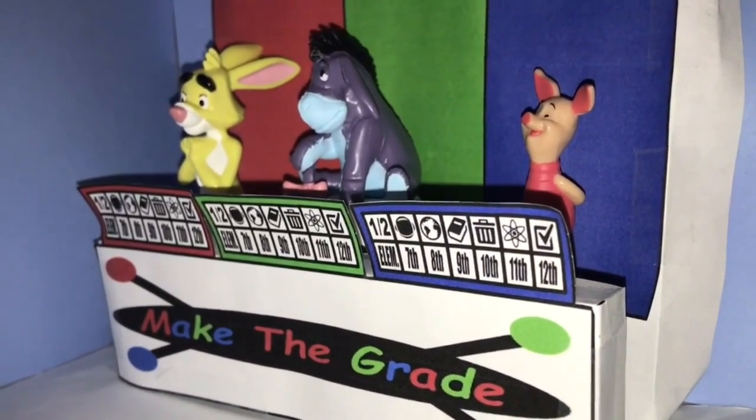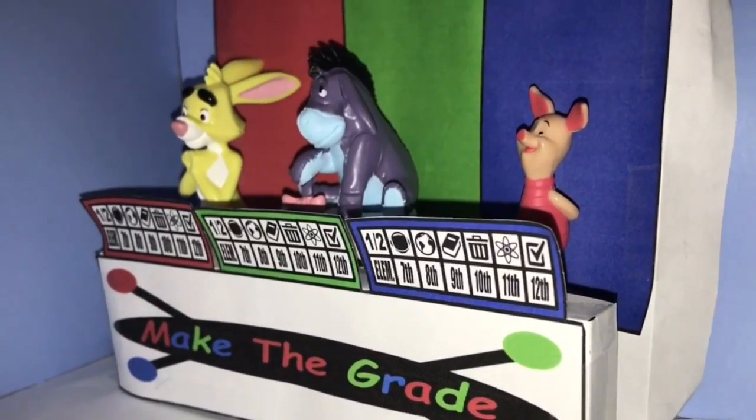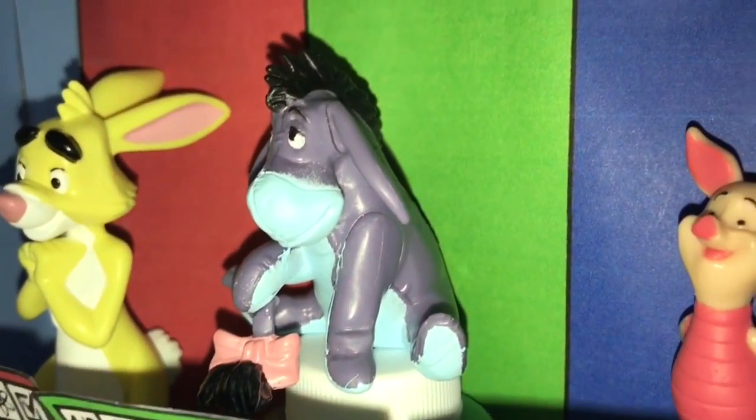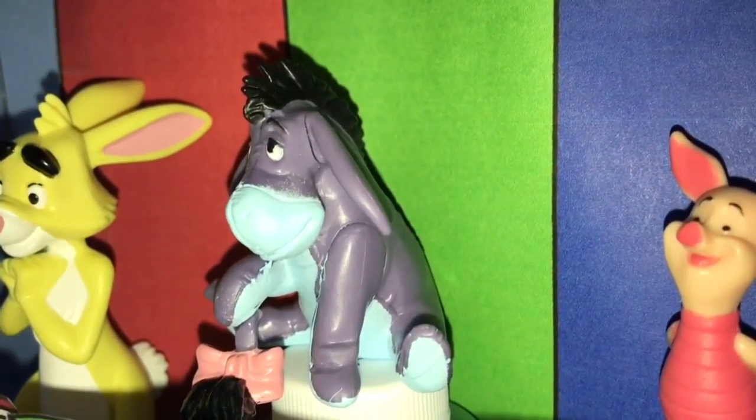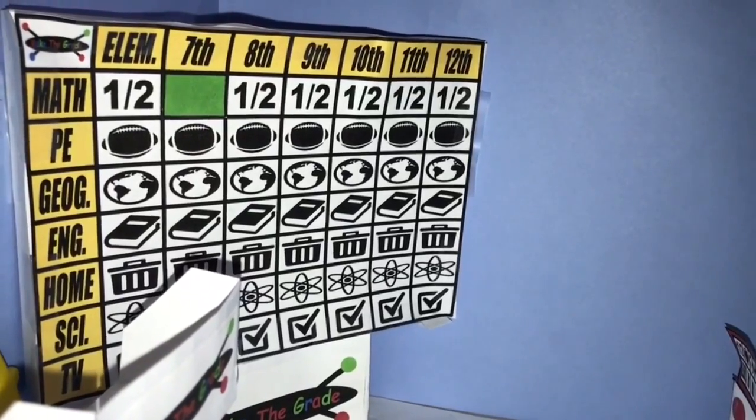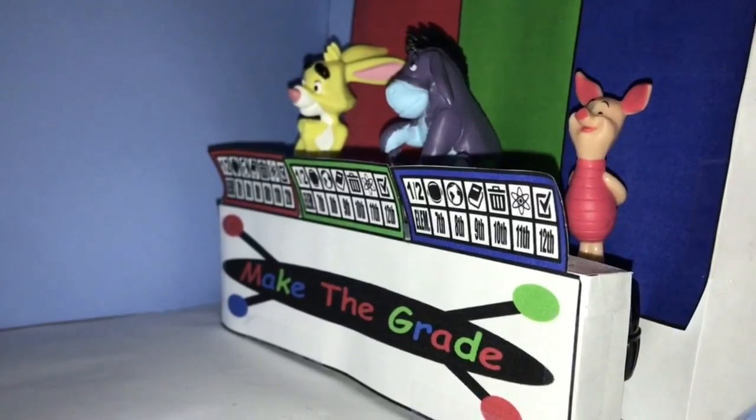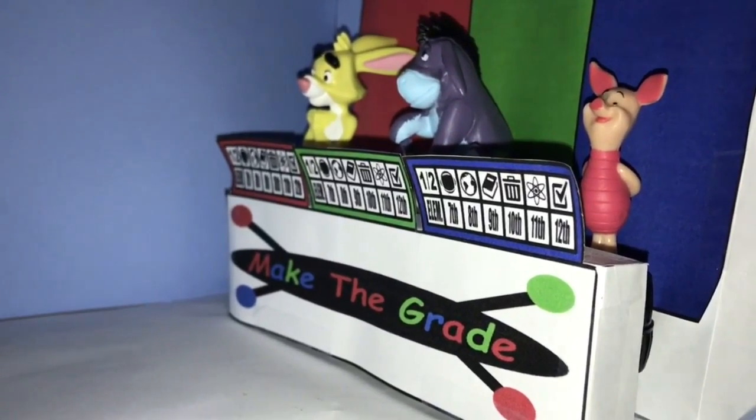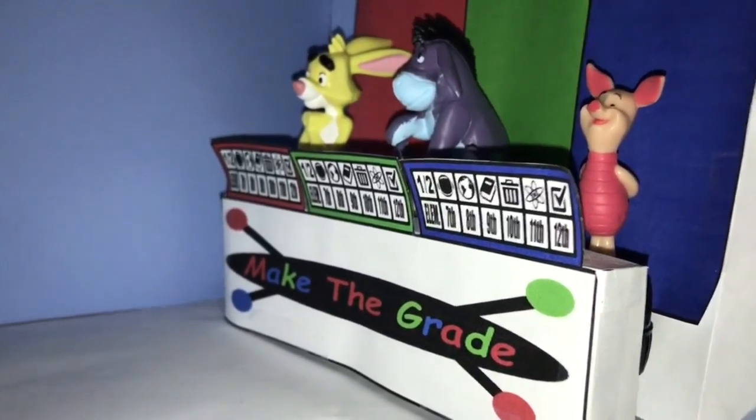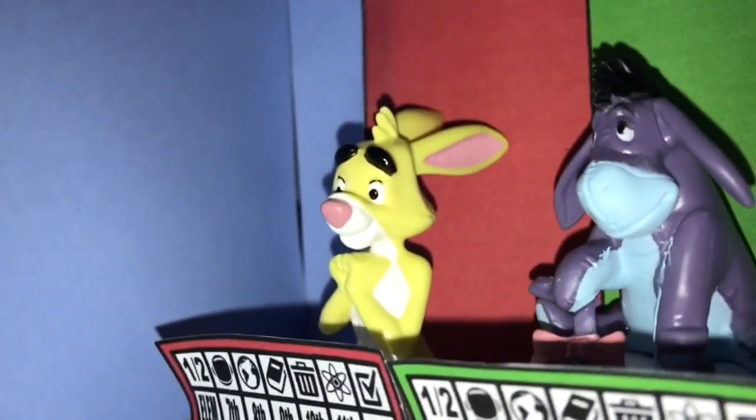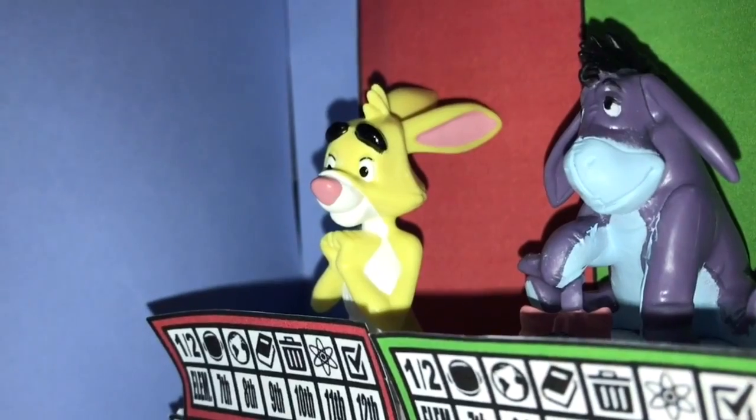How many ounces are there in a half pint? Eeyore. Eight. Eight is correct. Can I have tenth grade geography? Sure. What city in California is the Golden Gate Bridge located? Rabbit. San Francisco. Correct.